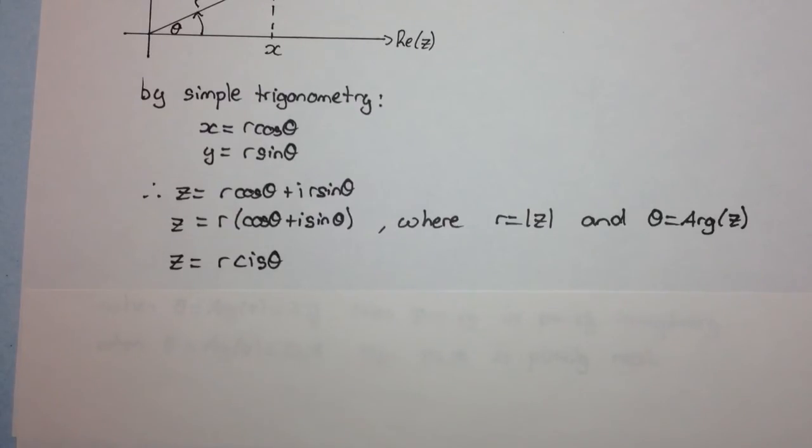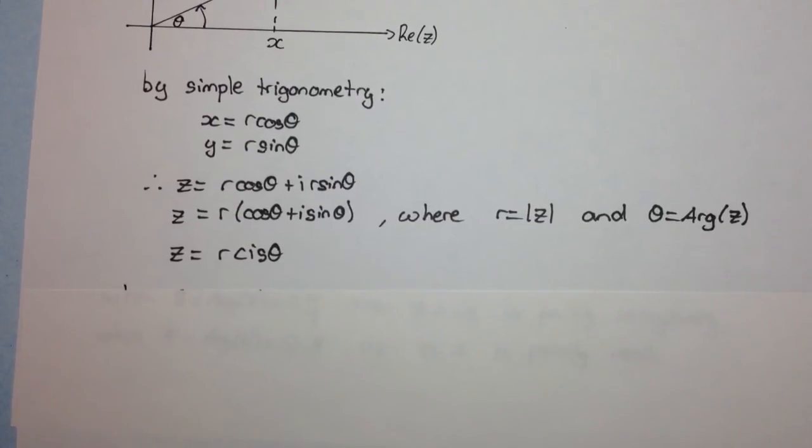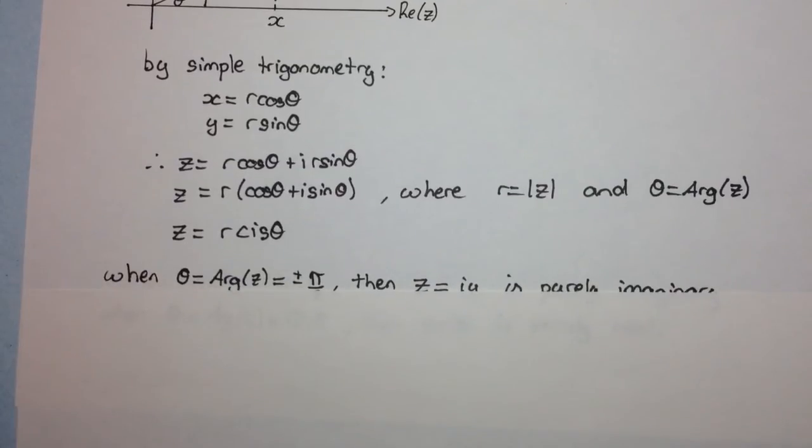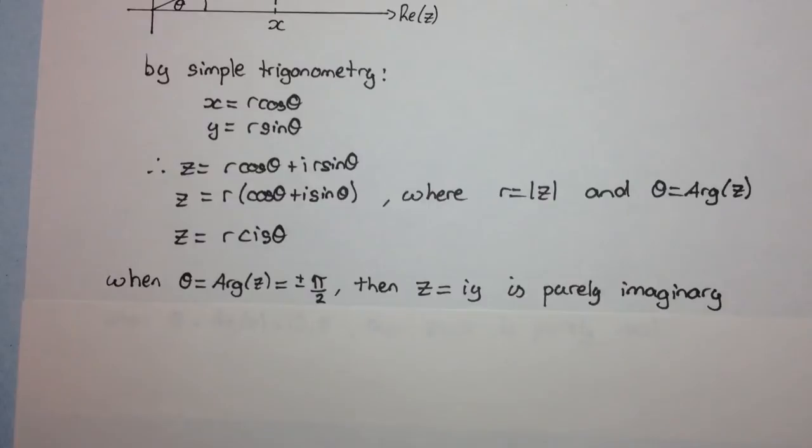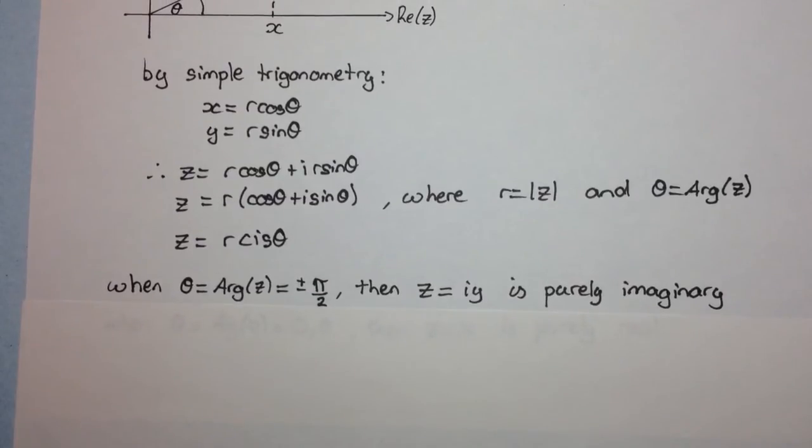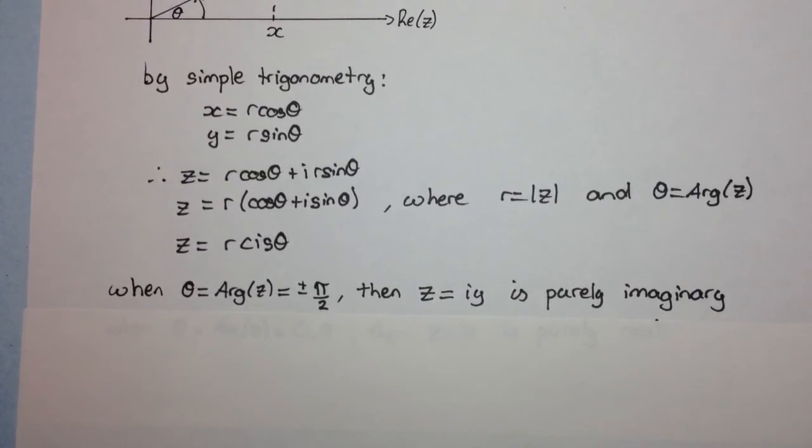Now, another thing that's important to note is when theta is plus or minus pi on 2, then we get our complex number as a purely imaginary complex number. Remember, a purely imaginary complex number is one that doesn't have a real part.